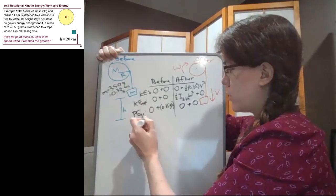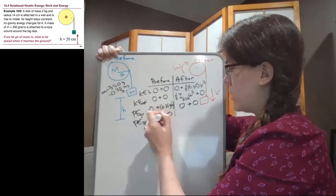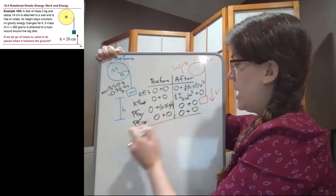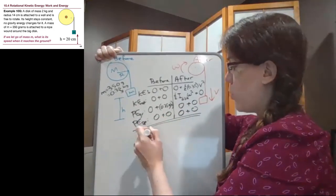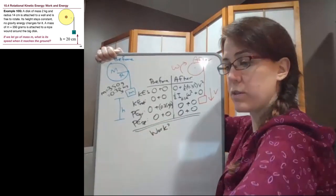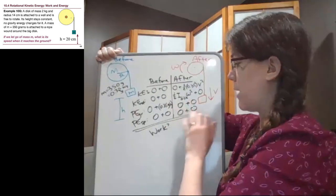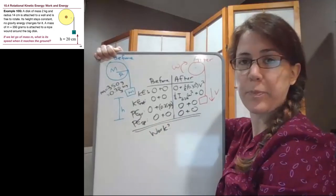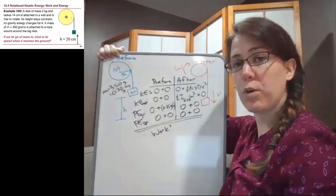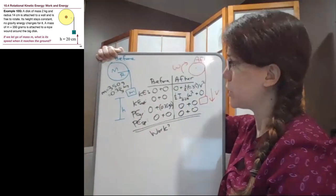Then we do a quick check - there's no springs at all in this situation, so we don't worry about them here. And we check, is there a work term? Now, as always, that work term is not part of the before column or the after column, it's underneath all of it. And we're looking for a separate push or pull or air resistance or friction.